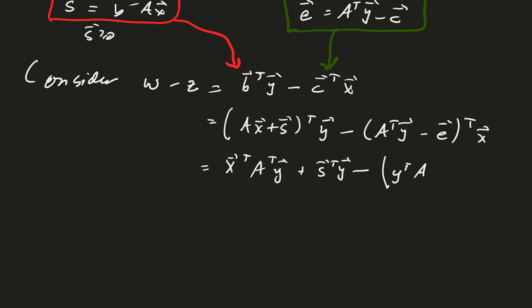And now remember that x transpose A transpose y and y transpose A times x are actually the same amount. So what we end up with is s transpose times y plus e transpose times x.